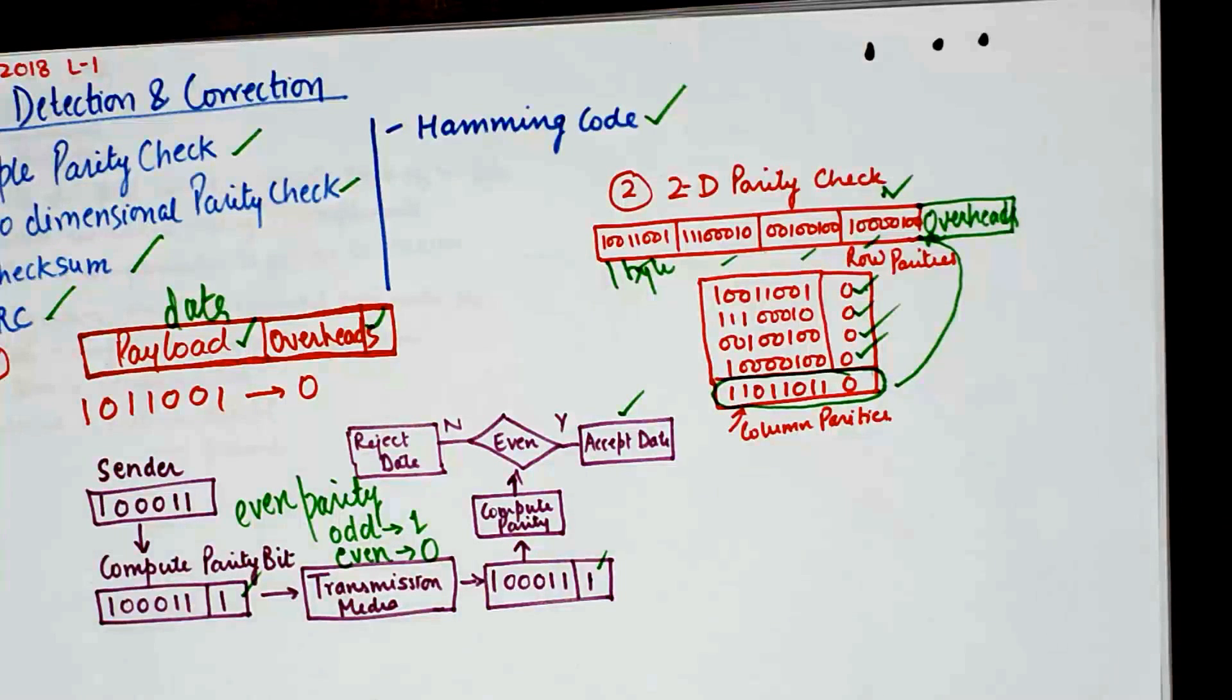So these were the two error detection and correction techniques which were introduced at the early stage of development of EDCs. And I will talk about checksum and CRC in the coming tutorials.